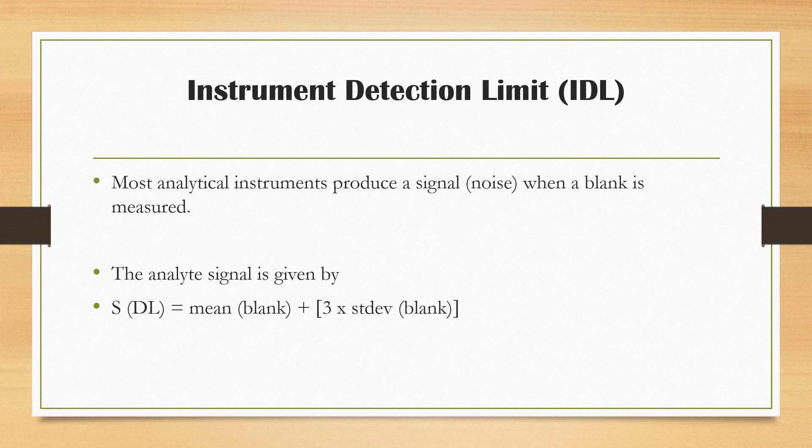When you run a sample, most analytical instruments will produce a signal which is associated with the sample you have measured. Likewise, when you run a blank solution, these analytical instruments also produce a signal or noise as a result of the blank solution. So from the blank solution that you run, you can calculate the detection limit of your instrument by finding the mean and the standard deviation of the blank solution.